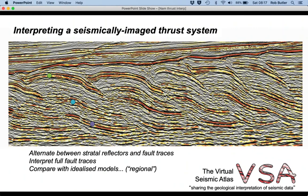We interpreted the full fault traces and in doing so identified the position of the floor thrust to the imbricate system. And we compared with idealized thrust system models using the regional concepts to check that our interpretation made geometric sense.